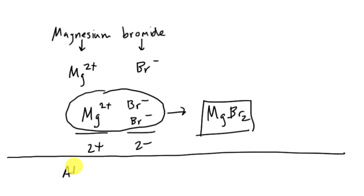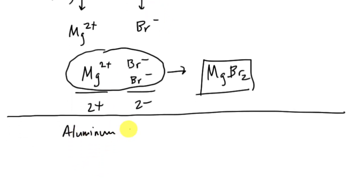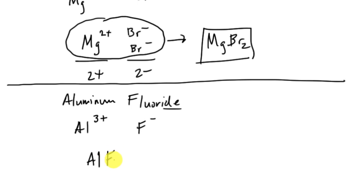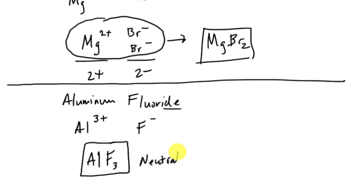The '-ide' ending tells us we have a compound. For aluminum fluoride: aluminum is 3+ and fluoride is 1−, so I need three fluoride ions to balance. That gives us AlF₃, a neutral compound. Ionic compounds must be neutral — the charges are still there, just balanced out. If you removed one fluoride it would be out of balance.